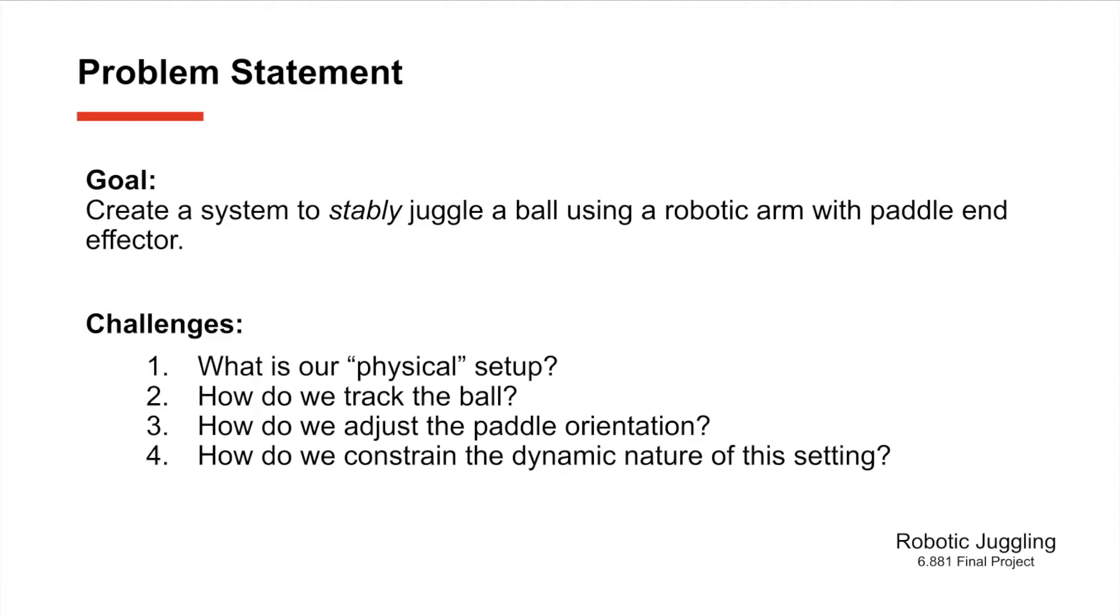Further, we want to be able to orient the paddle to create a stable juggle and the way we can create a stable juggle is by defining some axis where we want to juggle the ball on and we orient the paddle to get the ball to juggle vertically along this axis. Lastly, any environment where there are collisions in this manner there is a lot of dynamic things happening. So how can we constrain some of these dynamic factors and create a more robust and stable system?